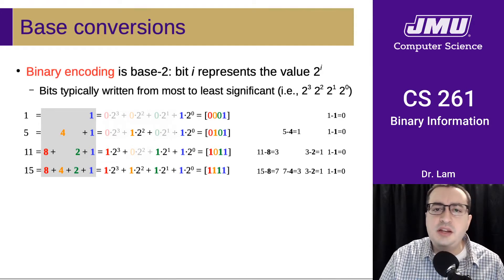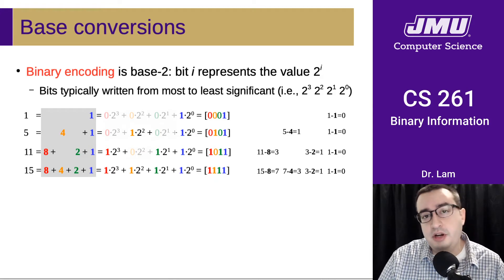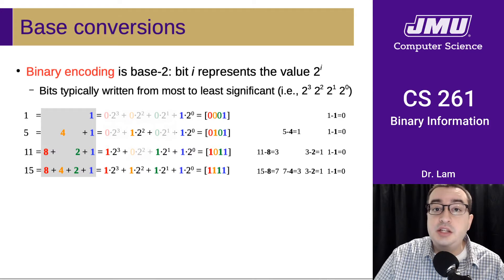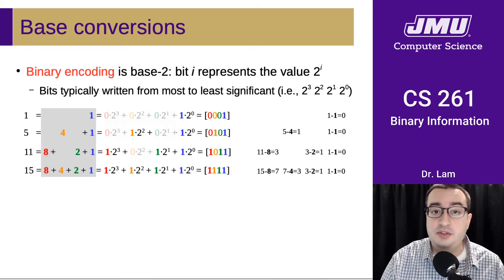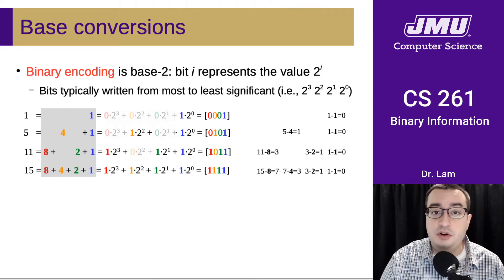Hopefully you've seen binary before, but here's a refresher. Binary encoding is base-2. Whereas we're used to working with 10 digits in base-10 (0 through 9), base-2 only has 2 digits: 0 and 1.